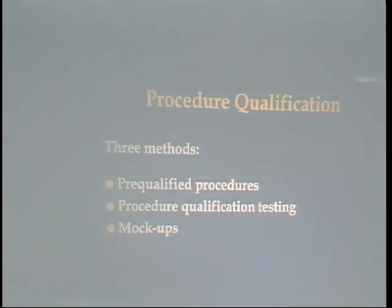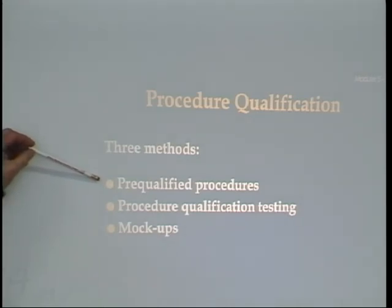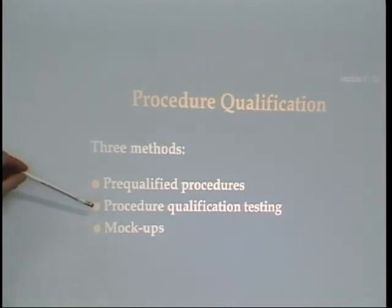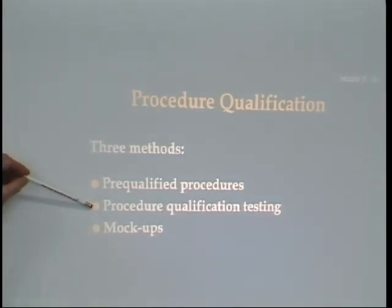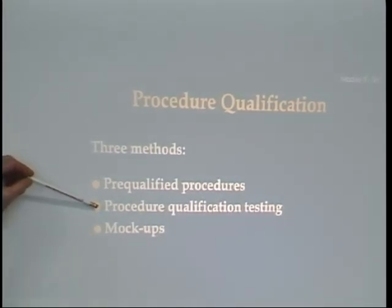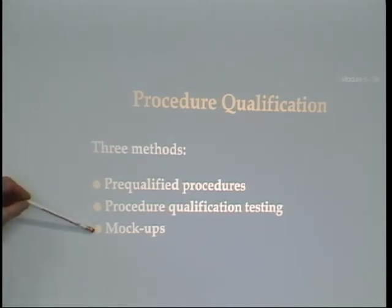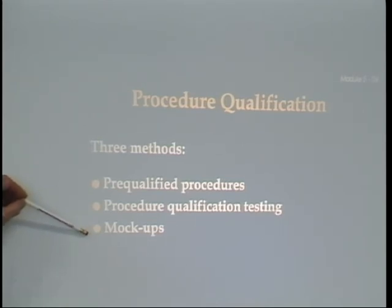There are three types of procedure qualification. First, pre-qualified welding procedures, specific to AWS D1.1 welding code. Second, procedure qualification testing, the type described at the beginning of this lecture. Third, mock-ups, where you actually make a pretend part and see how well the welding can be done on it.